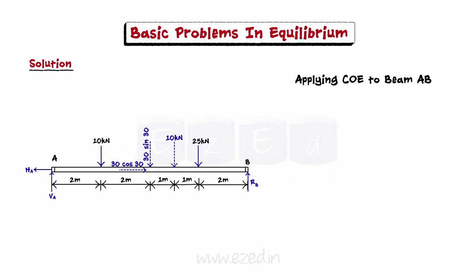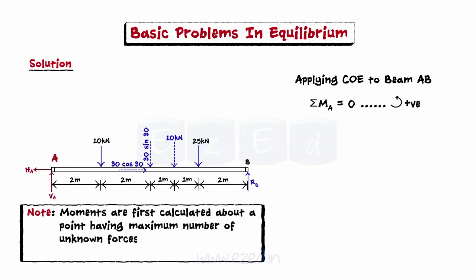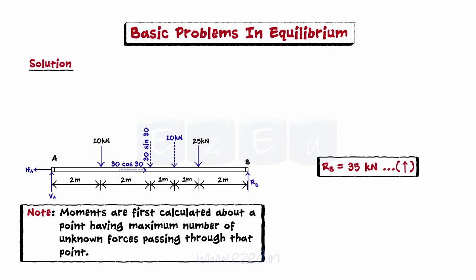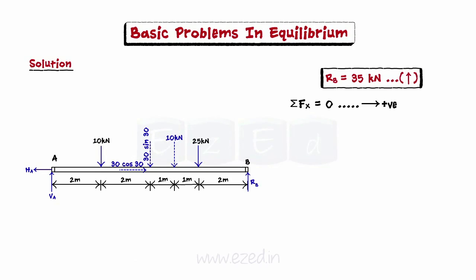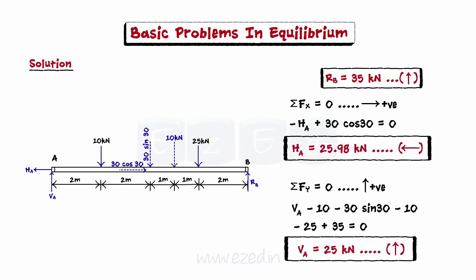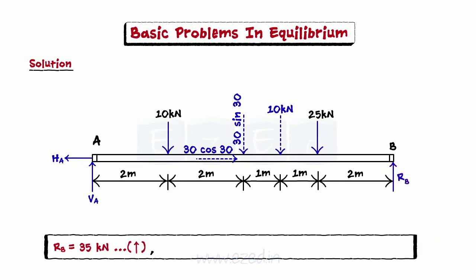Now we will apply the conditions of equilibrium to beam AB. We will first find the summation of the moments of all forces about point A and then equate it to zero. Kindly note that moments are first calculated about a point having the maximum number of unknown forces passing through it — in this case, point A. On simplifying, we find the support reaction at point B. Then we will find the summations of all forces along the x and y directions and equate them to zero, finding the horizontal and vertical components of the support reaction at A. Hence, we have found the vertical reaction at B to be 35 kN, horizontal reaction at A to be 25.98 kN, and the vertical reaction at A to be 25 kN.